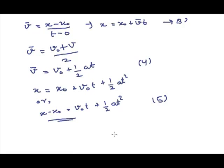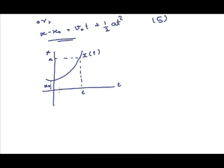From equation 5, it is clear that an object moving with constant acceleration along a straight line has a quadratic dependence on time. Therefore, the position-time graph for such motion will be parabolic in nature. This is the position-time graph of a particle moving with uniformly accelerated motion.